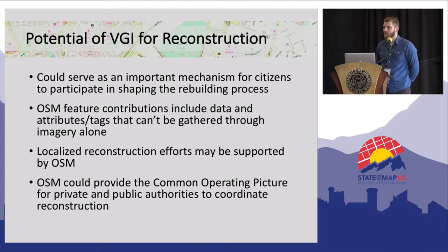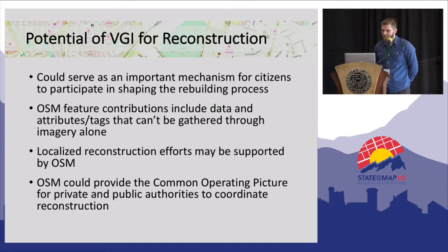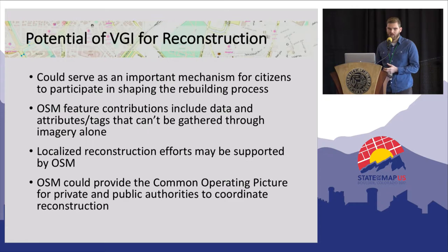Reconstruction has already begun in a lot of parts of Syria with local groups organizing debris removal, and with the regime likely to stay in power, a lot of donors are going to want to reach out to these local groups. Volunteer geographic information technology could help provide accountability and reassurance to those donors regarding the projects they fund. A VGI platform can also provide a common operating picture where utility companies, donors, local authorities, citizens, and city planners can all come together to add and update data.